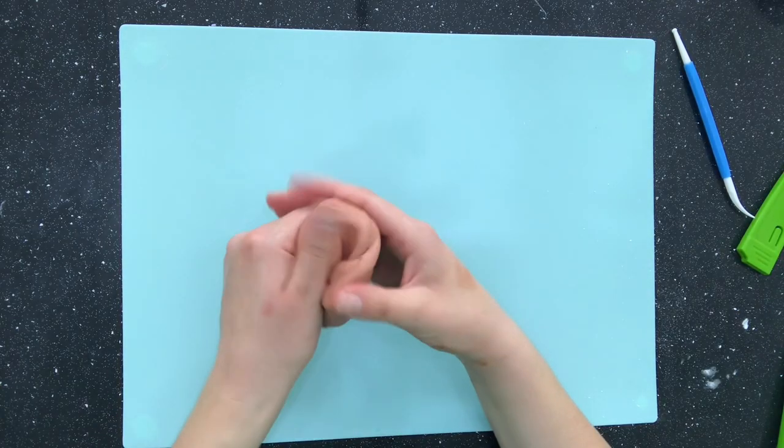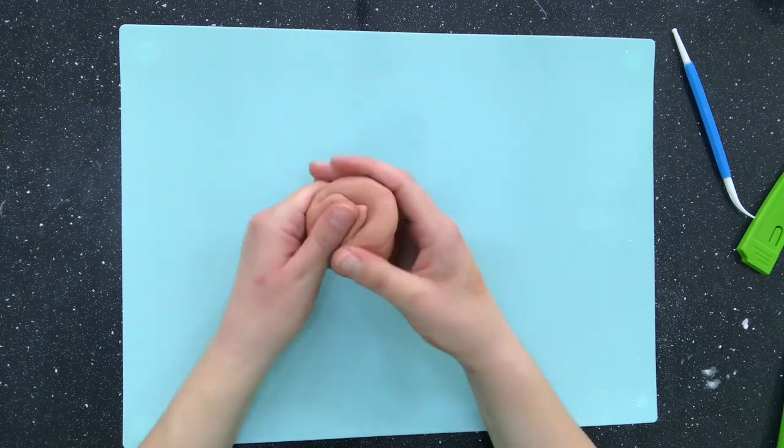So I'm starting with some woodland brown modelling paste. I usually use Renshaw's modelling paste but this week I'm going for Saracino because I got some at Cake International last week so I'm desperate to try it out.